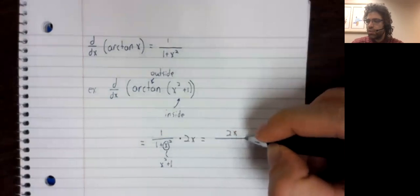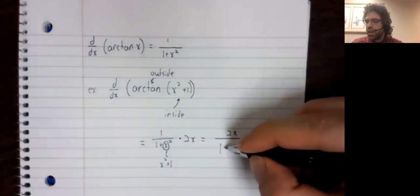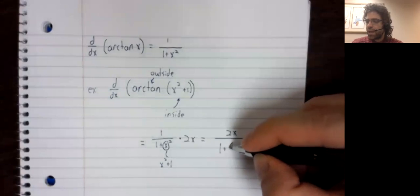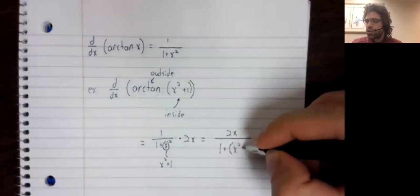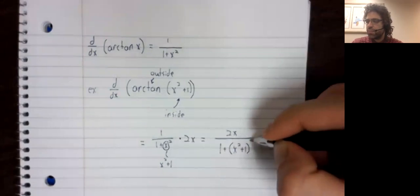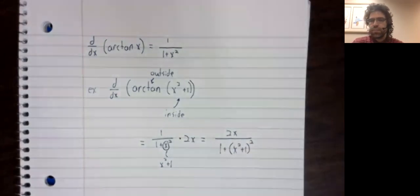So replacing x squared with the inside function, it becomes x squared plus one.